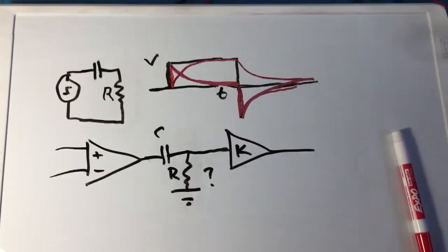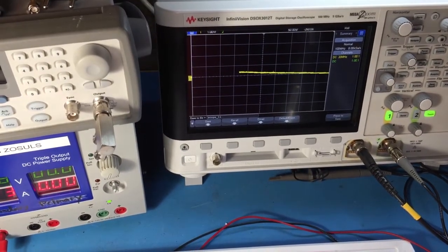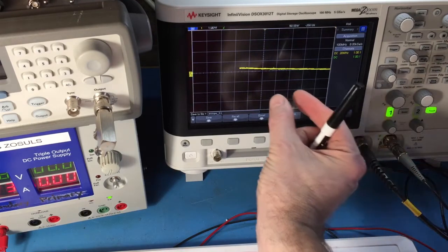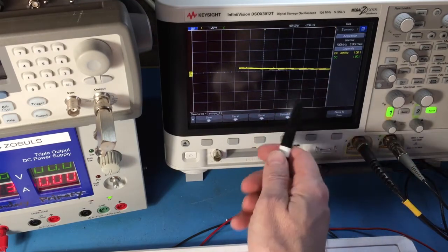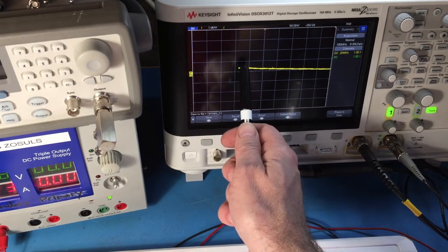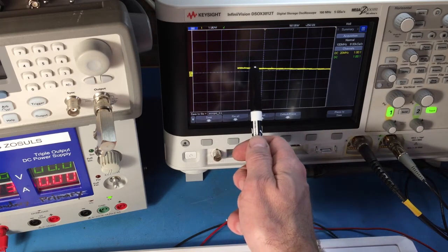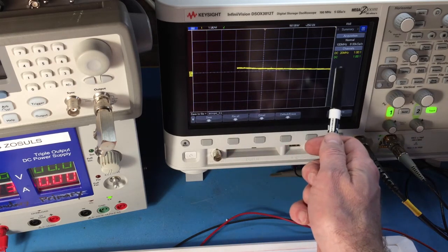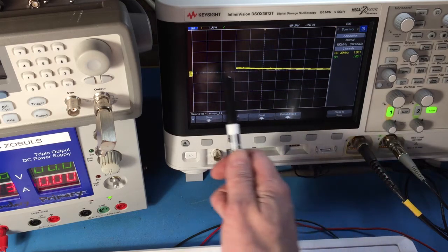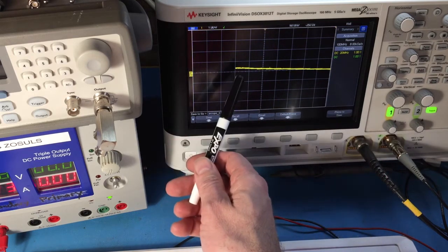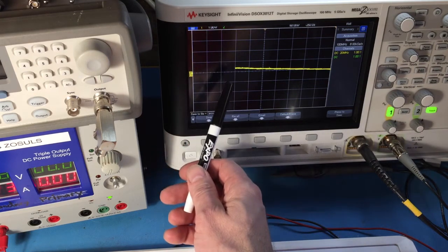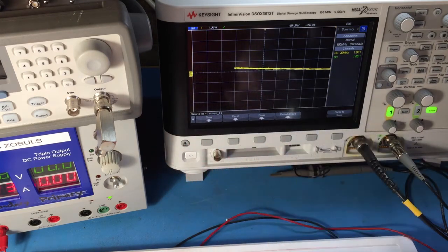I have the scope on a really slow timescale. It's on 50 seconds per division. So the whole entire time I was talking, this was drifting slowly, slowly down. And it drifted about seven divisions. So over 350 seconds, it drifted about 0.3 volts. We're on one volt per division over here. So that's a super slow time constant.